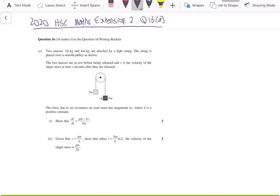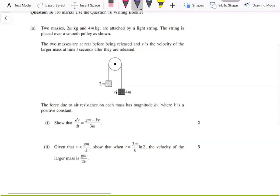The string is placed over a smooth pulley. The two masses are at rest before being released, and v is the velocity of the larger mass. The smaller mass is also going to move at v because they are attached by a pulley, at time t seconds after they are released.